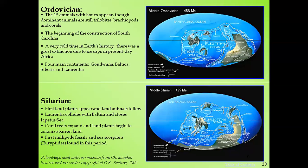Laurentia collided with Baltica, closing the Iapetus Sea. Coral reefs expanded and land plants began to colonize barren land, increasing the oxygen composition — necessary to support life. The first millipede fossils and sea scorpions, the eurypterids, were found in this period.